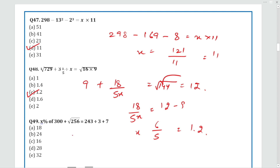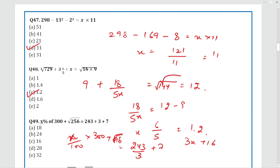Question 49: There is a percentage involved — percent means divide by 100. Multiplying by 300, plus √256 = 16. Then 243 ÷ 3 + 7. Solving the full equation gives 3X + 16 = 88, so X = 24. The answer is X = 24.